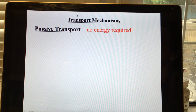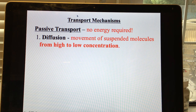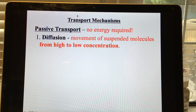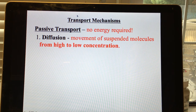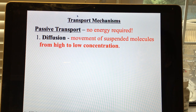Now let's talk about passive transport. With passive transport, no energy is required — the cell doesn't need to use ATP. The most basic type is diffusion: the movement of suspended molecules from high to low concentration. Diffusion occurs even without a cell — if someone sprays perfume, those molecules diffuse throughout the air due to random molecular motion and increasing entropy.